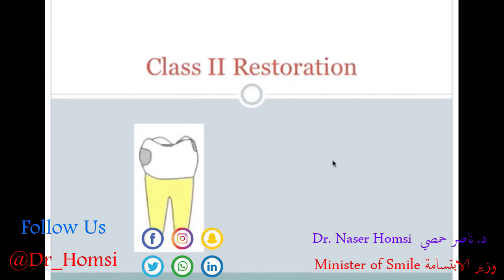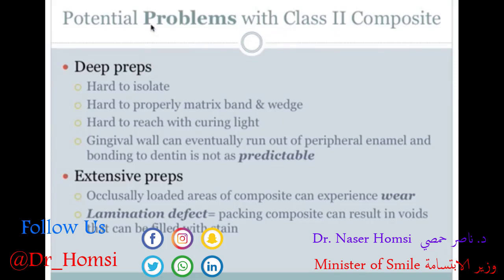Class 2 restorations incorporate the proximal surfaces of posterior teeth — so now we're not only talking about the occlusal surface, but also the mesial, distal, or both surfaces. Potential problems with class 2 composite include: if you have a deep preparation on a mesial or distal surface going below the gum line, it can be very hard to isolate — which is critical for composite. You don't want saliva or blood to infiltrate the area, as it makes curing very difficult and introduces voids.